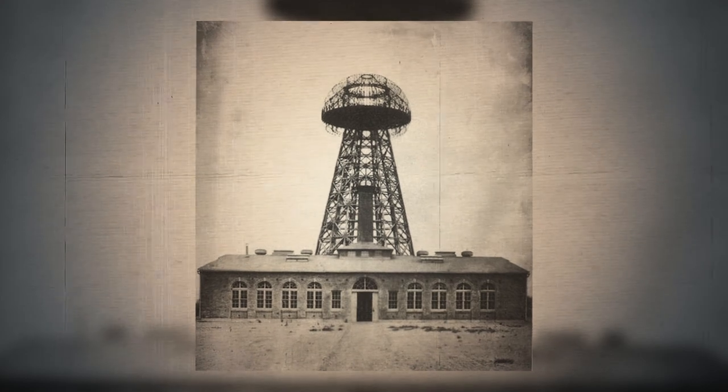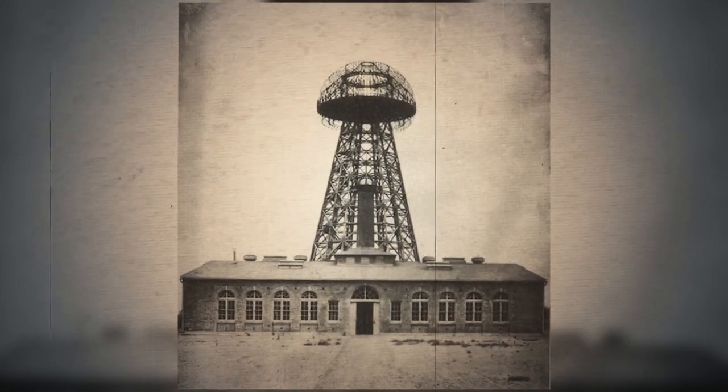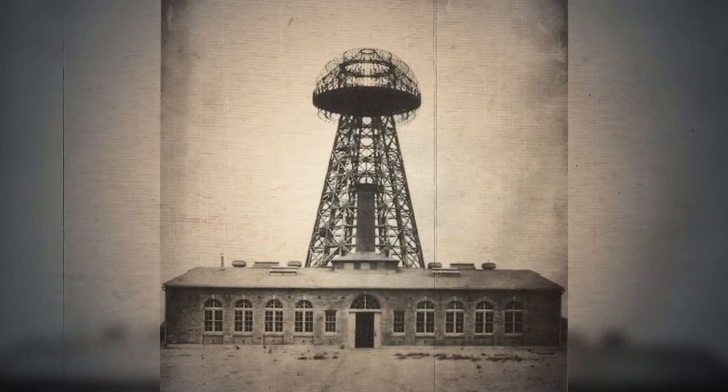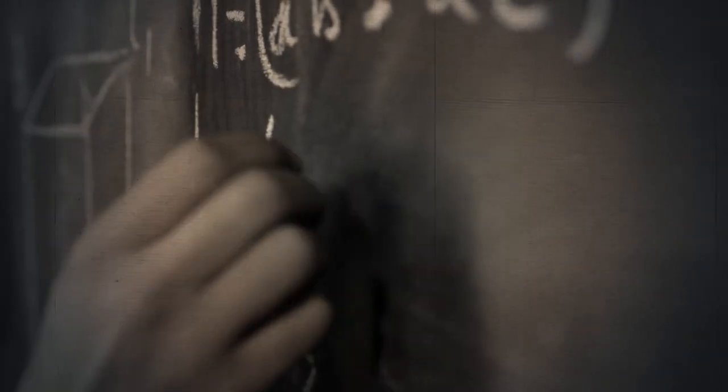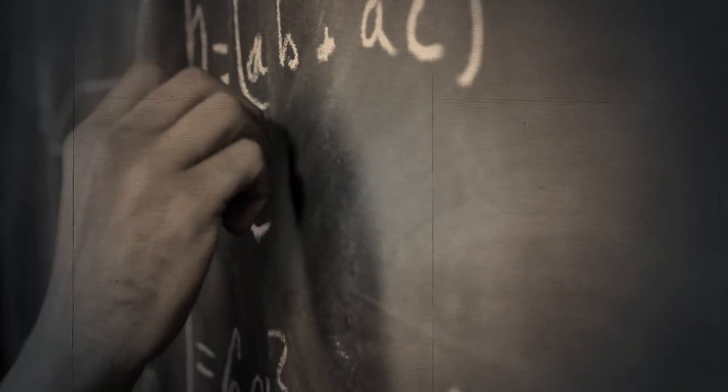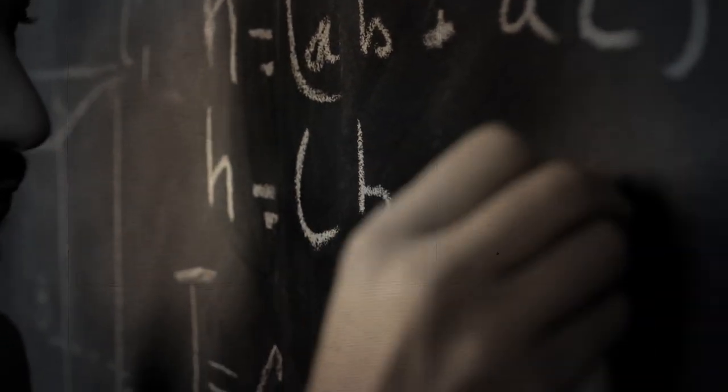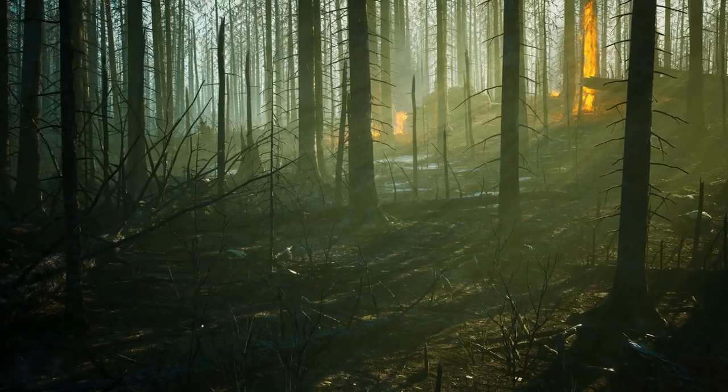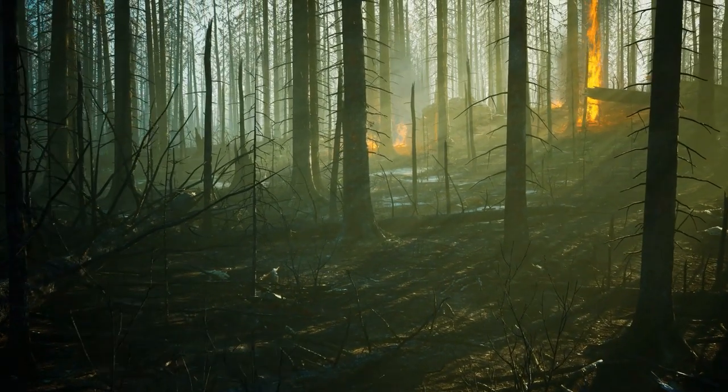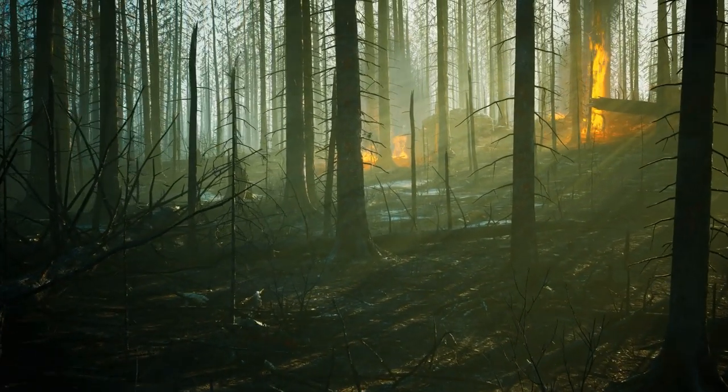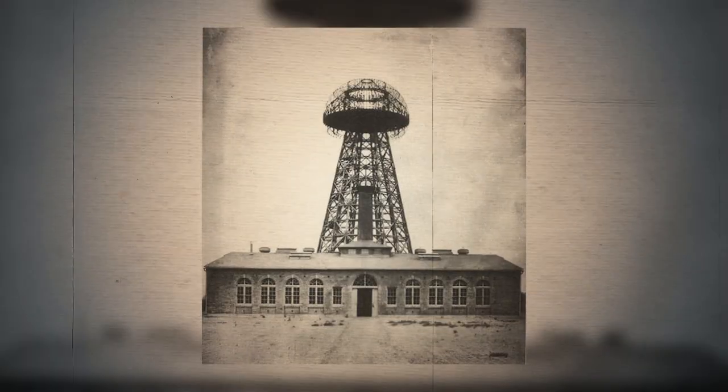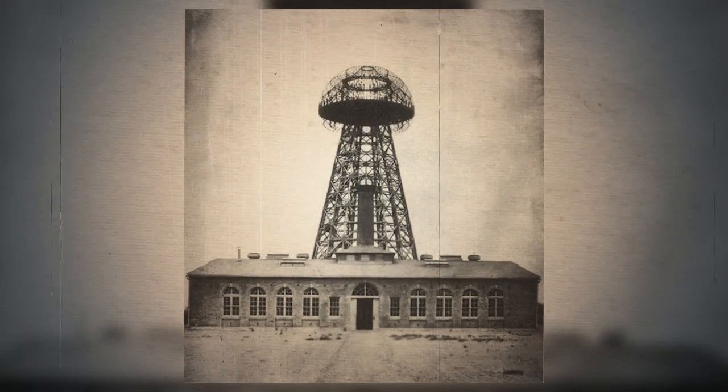In 1902, he built the Wardenclyffe Tower to transmit electricity over land. Unfortunately, engineers note that the currents will spread in all directions and become too diffuse to be useful over long distances. Furthermore, the potential dangers of wireless electricity to surrounding wildlife were not taken into account. So the Wardenclyffe Tower project had to be shelved.